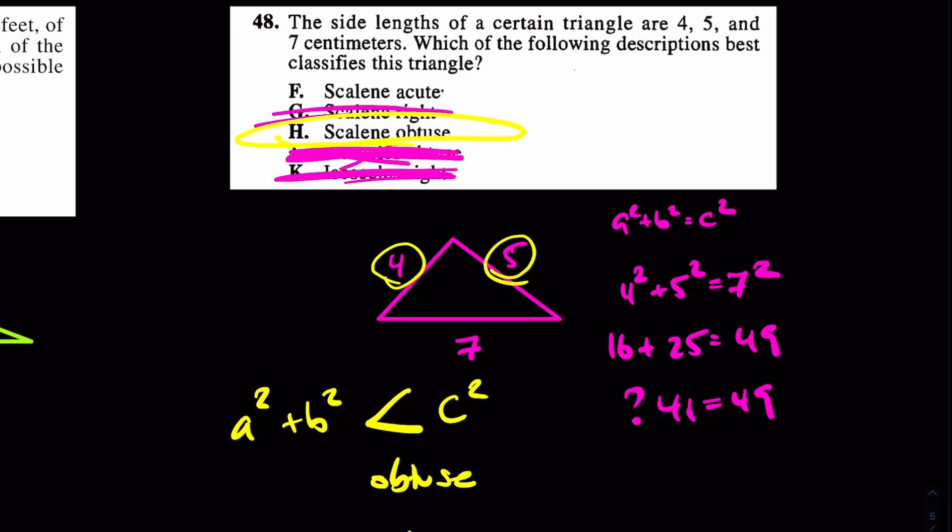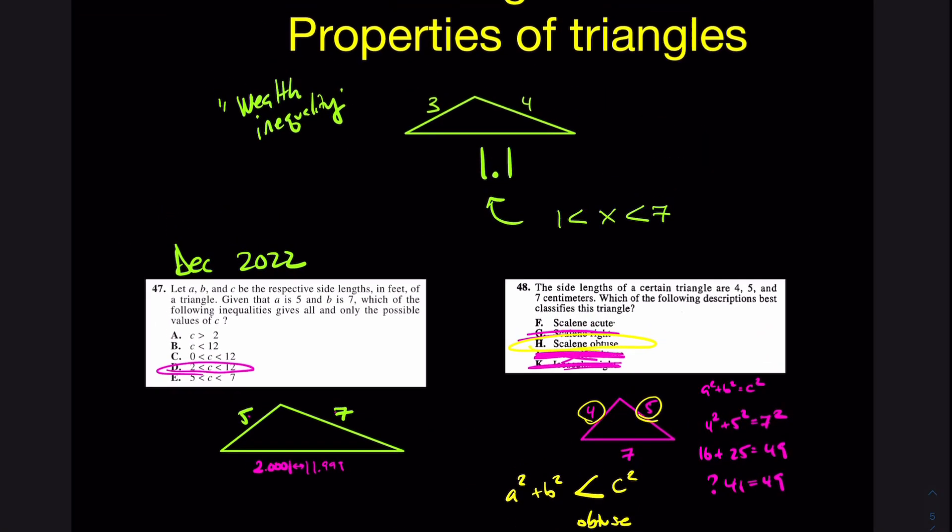Which it is the case. The answer here is H. And again, why? Well, because 41 is less than 49. Again, these two sides added together squared—of course, a² + b² is less than 7²—therefore I like H here.